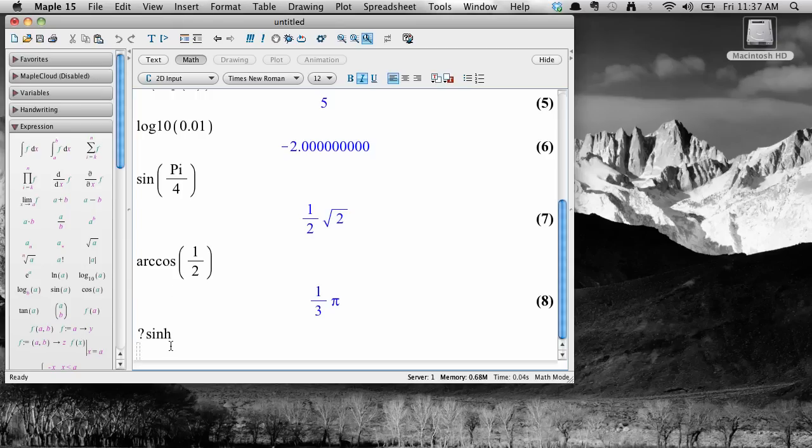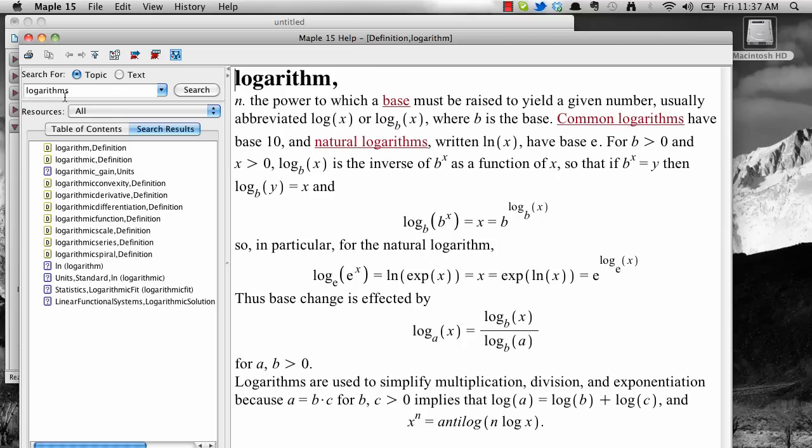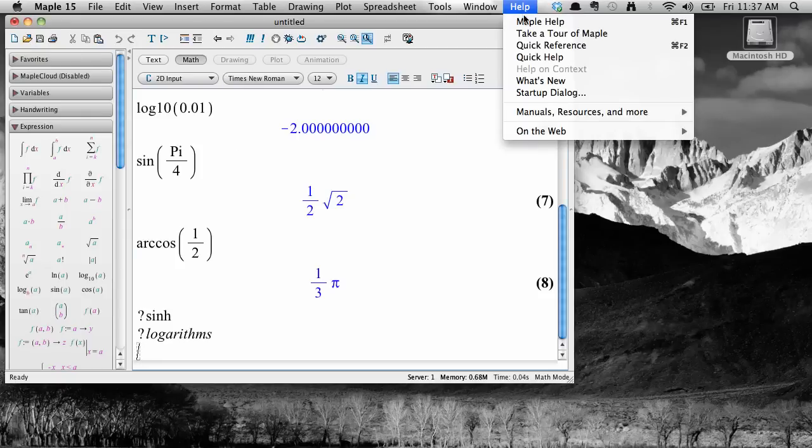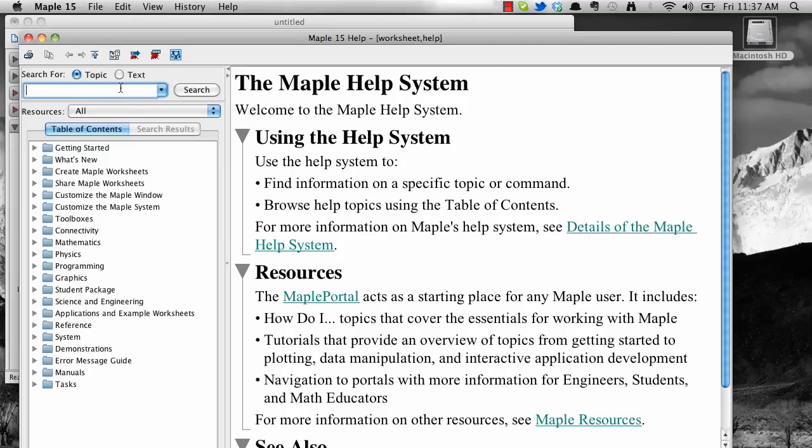I could also bring up this help screen by entering a single word search term. For example, to learn more about logarithms, type question mark logarithm. Another way to get help or browse features is to go to the Help menu, select Maple Help, and then enter in the search term you want. You can find help on any of Maple's features this way.